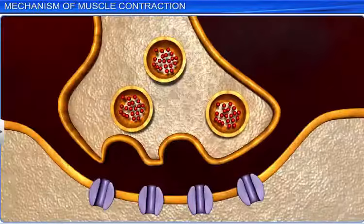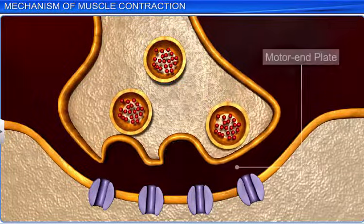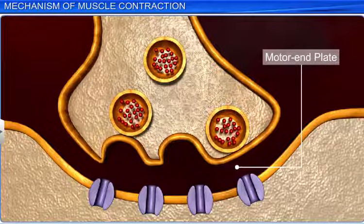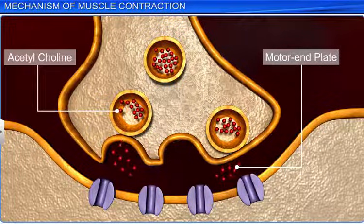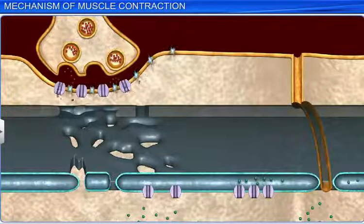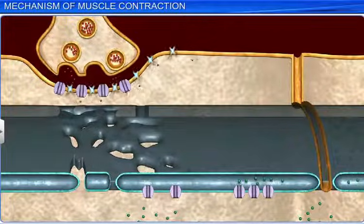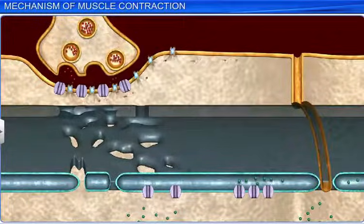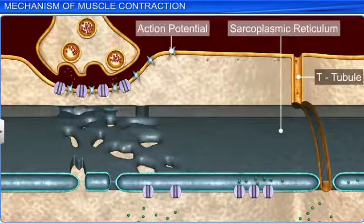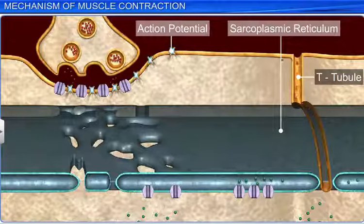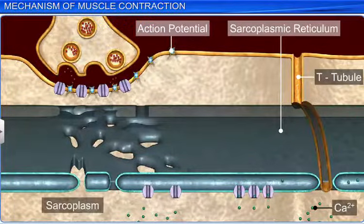When a neural signal reaches the motor end plate, it releases a neurotransmitter called acetylcholine. This neurotransmitter generates an action potential in the sarcolemma, which spreads into the muscle fiber, causing the release of calcium ions in the sarcoplasm.